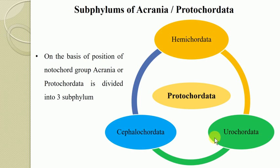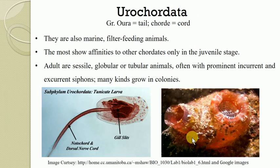Today we are going to discuss Urochordata. Urochordata is a Greek word made up of two words: 'oura' means tail and 'chorda' means chord, referring to the Notochord, which occurs in the larval tail only. As the Notochord is restricted to the tail region in larval stages, they are known as Urochordates.